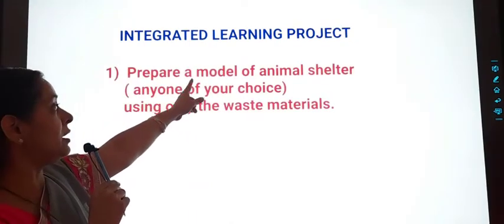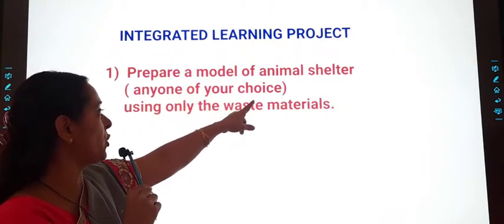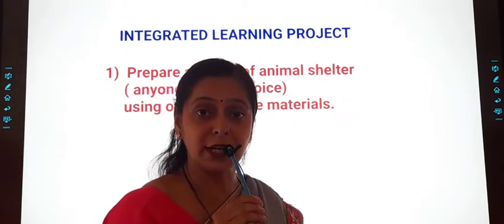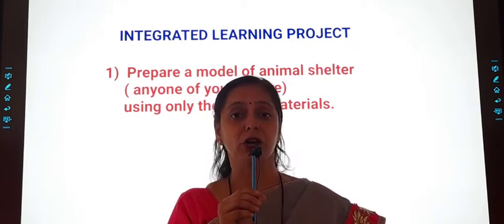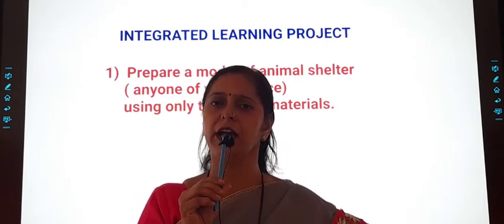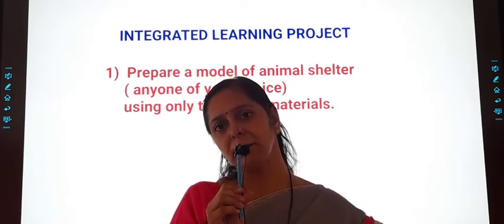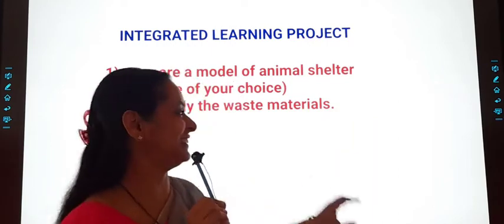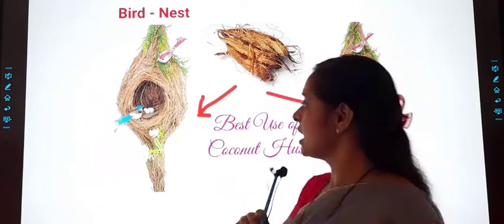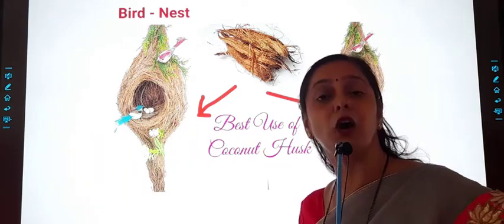So students, first of all, prepare a model of animal shelter, animal of your choice using only the waste material. Why am I saying waste material? Because we don't want to waste, and you also have to care for nature. We don't have to damage or destroy the nature. You might be thinking how will this project be? Let me tell you. Listen, we are going to do something unique. That is, best use of a coconut husk. That means best out of waste.